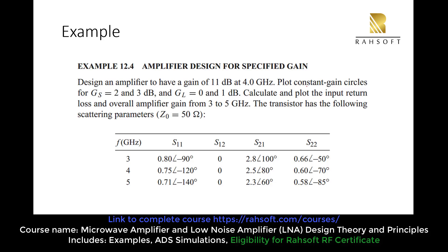We have to plot the constant gain circles for GS equal to 2 and 3 dB. These are not going to be our maximum GS values. We also plot for GL equal to 0 and 1 dB. Each of these values are going to give a different circle for us.